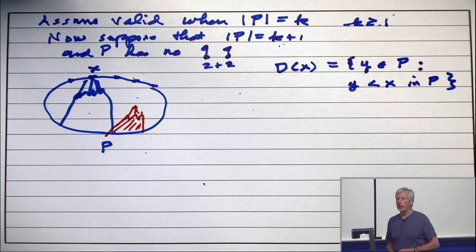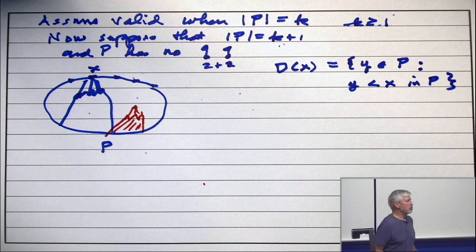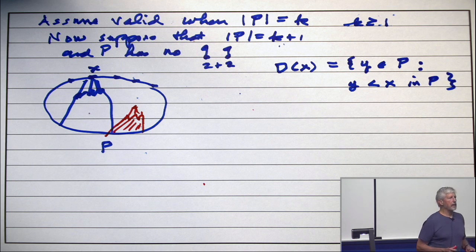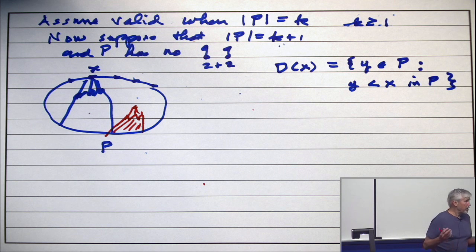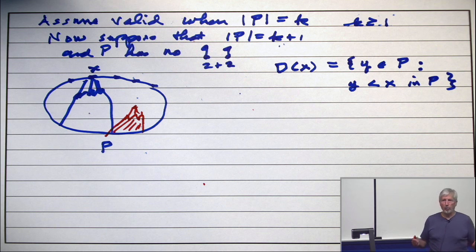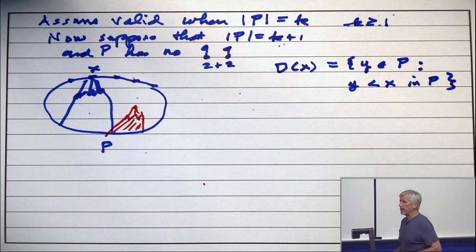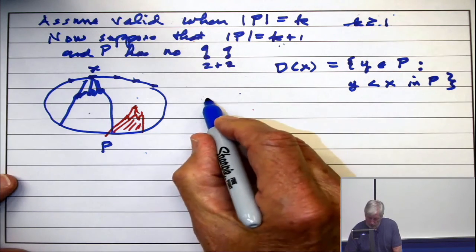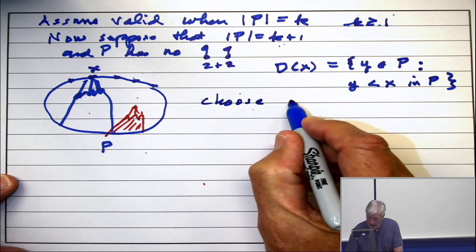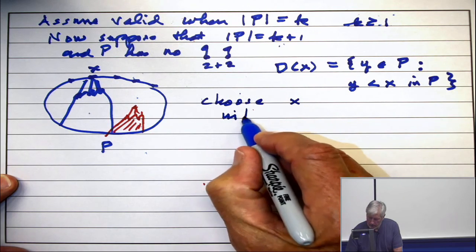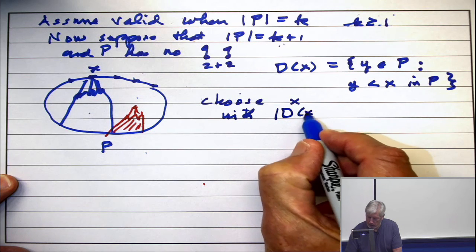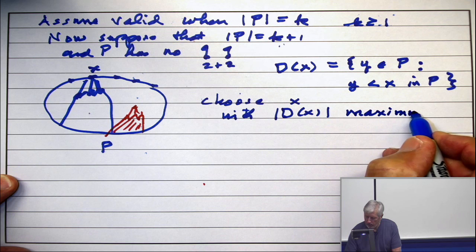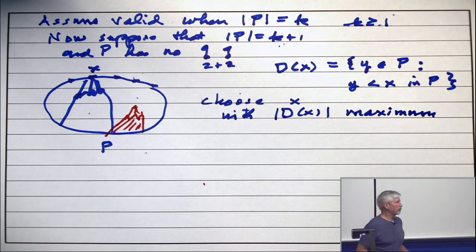All right. Now, here's what I want you to do. Look at the poset and choose an element whose down set is as big as possible. Big in the sense of size. Pick one whose down set is as big as possible in terms of size. So choose X with the cardinality of down from X maximum. The biggest one in size.